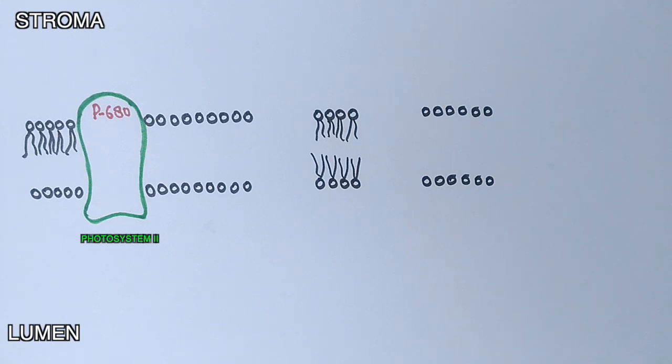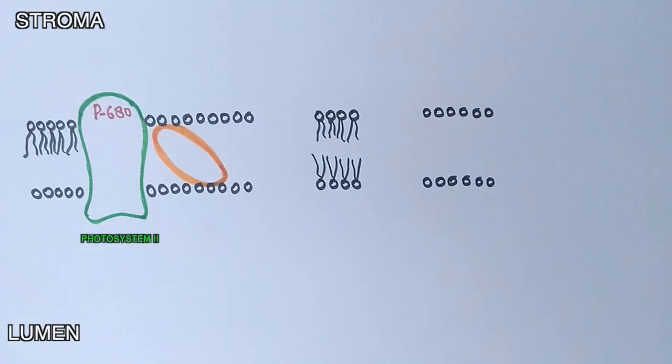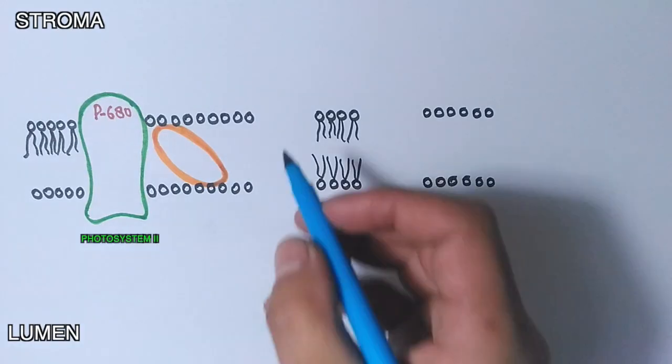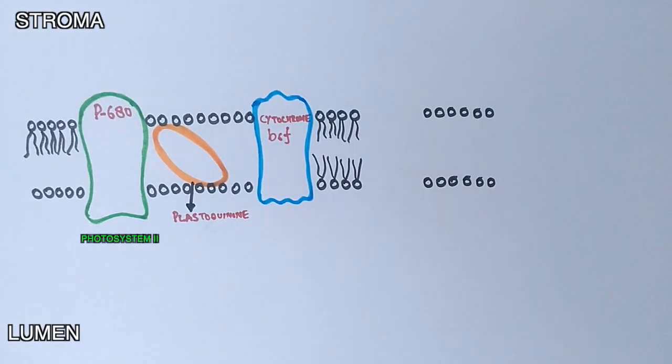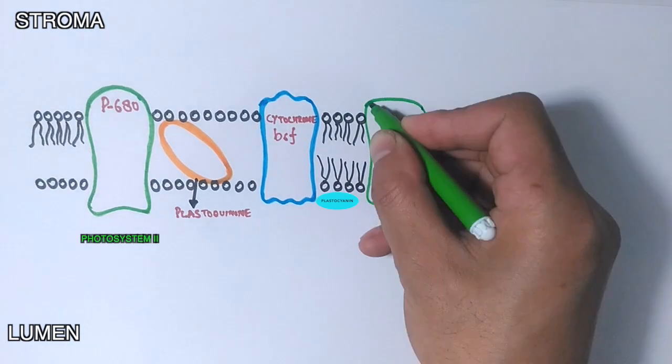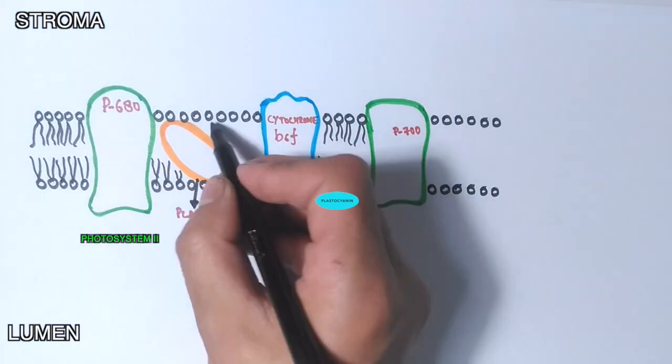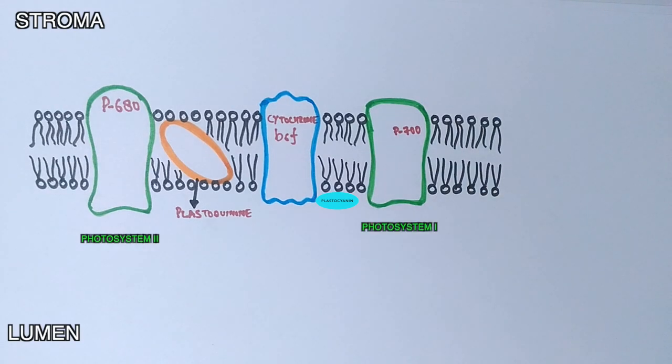Then we have different mobile electron carriers. Plastoquinone molecule is the first electron carrier. After that we have cytochrome B6F complex, and finally we have plastocyanin. Then again we have a light-harvesting molecule by the name of photosystem 1, also called P700, as its maximum absorbing wavelength capacity is 700 nanometers in the visible spectrum.